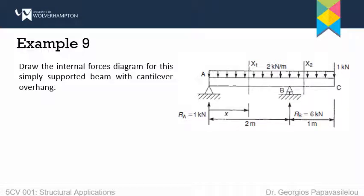In this example, we will apply the FAST method to draw the internal forces diagrams. The first thing I need to do is to substitute all supports with their reactions — in other words, to draw the free body diagram.